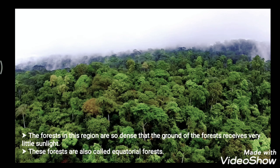The forests in this region are so dense that the ground receives very little sunlight. These kinds of forests are called equatorial forests. In this lesson we will discuss an African country, the Democratic Republic of the Congo, through which the equator passes.